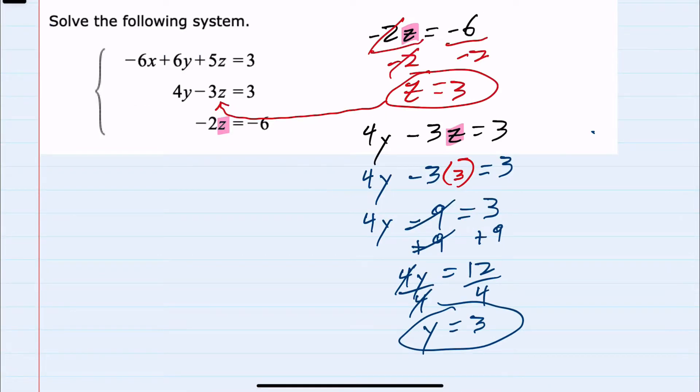Replacing z with 3 and replacing y with 3 to solve for x. So that top equation, negative 6x plus 6y plus 5z equals 3. We don't yet know what x is.